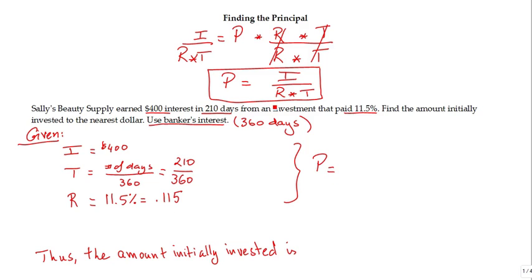Now the P, as we found it earlier here, the principle is interest divided by rate multiplied by time.